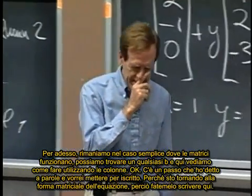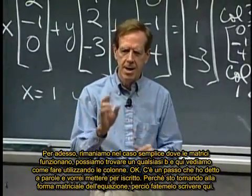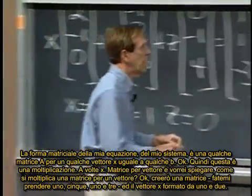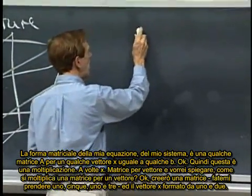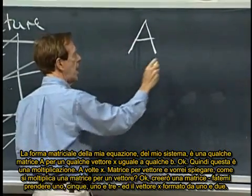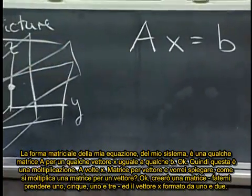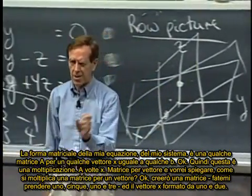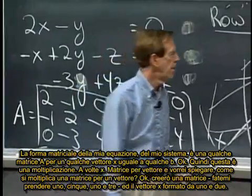There was one step that I realized, which I was saying in words that I now want to write in letters. Because I'm coming back to the matrix form of the equation, so let me write it here. The matrix form of my equation, of my system, is some matrix A times some vector x equals some right-hand side B. So this is a multiplication, A times x, matrix times vector, and I just want to say, how do you multiply a matrix by a vector?